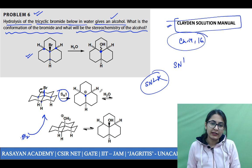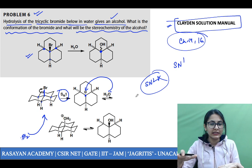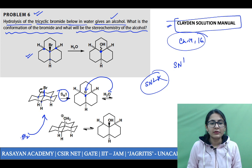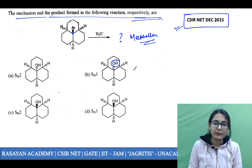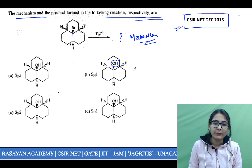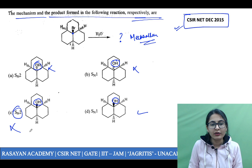It has to be an SN1 reaction. Even though complete planarity of the carbocation cannot be achieved, SN1 is the only possibility. Because it is not completely planar, you are only getting water attacking from the top. If it became completely planar you could have OH attack from above or below, but since it is not completely planar and sterically hindered from below, water attacks from above — so the OH will turn out to be above the plane. The OH cannot be a wiggly line; it has to be above the plane. Answer is option D — December 2015, directly from the Clayden solution manual.